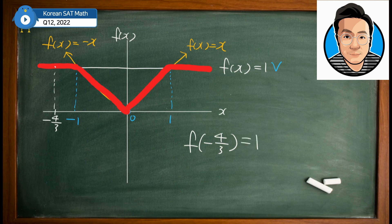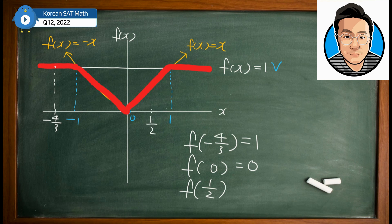Then, f(0). This is still equal to 0. We're talking about the origin. And f(1/2). 1/2 should be right here. If you think about this graph of f(x), then your y value has to be also 1/2.